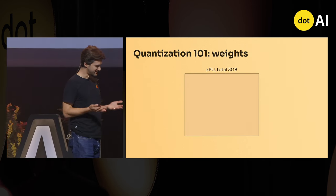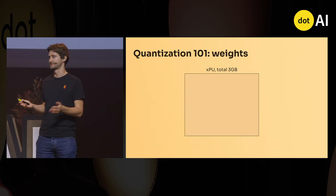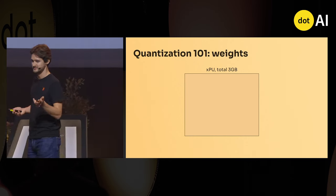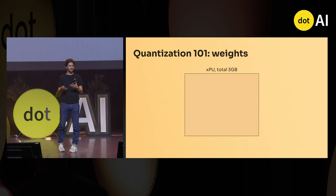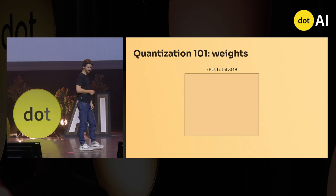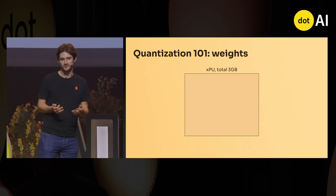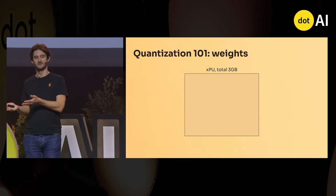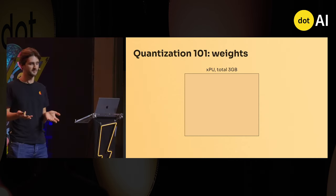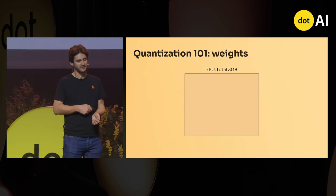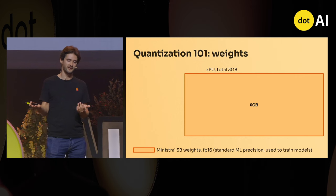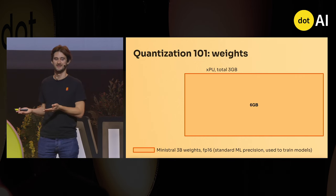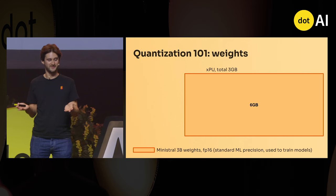Let's say we have Ministral 3B and a device — CPU, XPU, GPU, NPU, you name it — and we want to embed the model on the device with 3 gigabytes of RAM. If you do it naively, you would use the precision from training: FP16 or BFloat16, which is 16 bits per weight — 2 bytes per weight — so that's 6 gigabytes. As you can see, it does not fit.